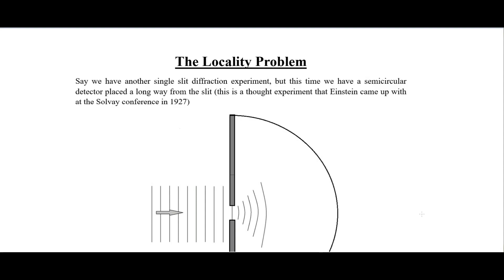In this video I will be discussing the locality problem of quantum mechanics, which is the problem that you can have things happen instantaneously rather than having to be propagated through space and time at the speed of light.